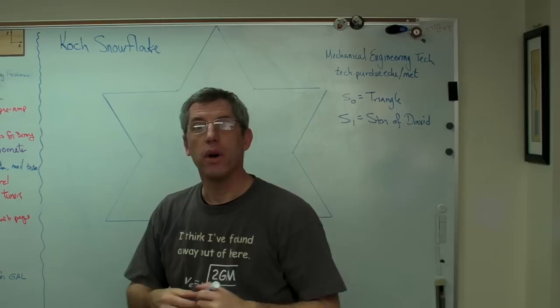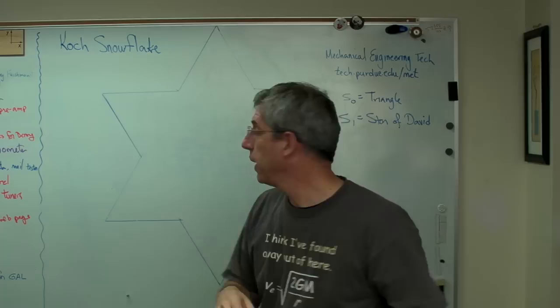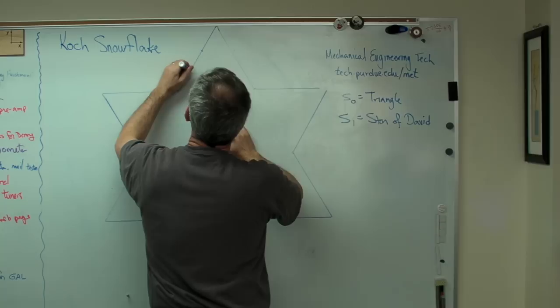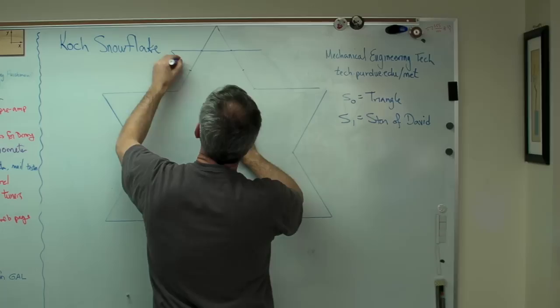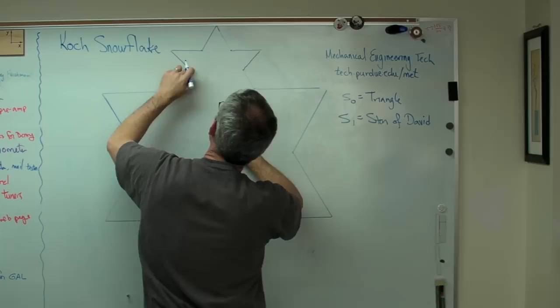So S1 is my Star of David. It's just coincidence it looks like that. Now, if I did this set of operations once, this algorithm, this algorithm is a set of patterns that I'm going to execute again and again and again. If I did that once, I ought to be able to do it again, right? So let's do it again. I'm going to have to eyeball this. Those look like about a third. Let's try this again.